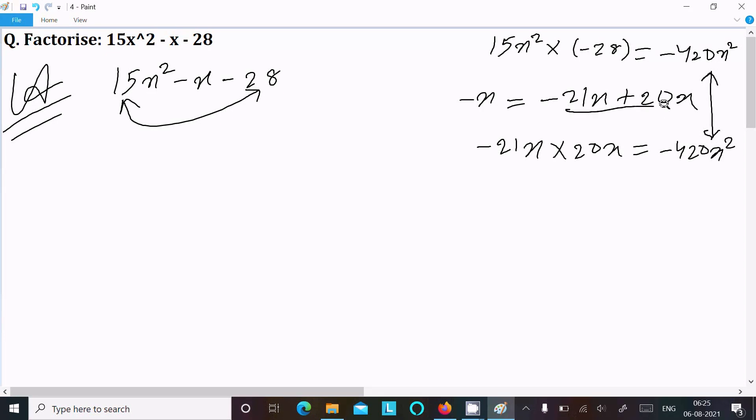So here write 15x². In place of -x we can write -21x + 20x - 28. After that take the common between these two. 3x is the common, this you get 5x - 7.